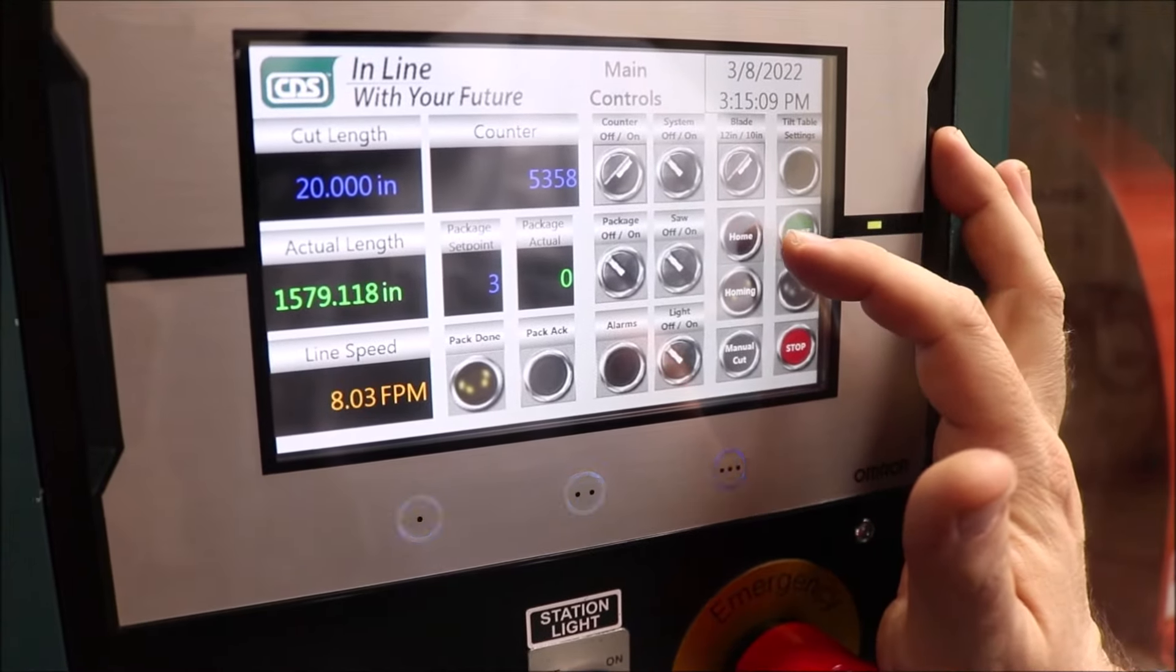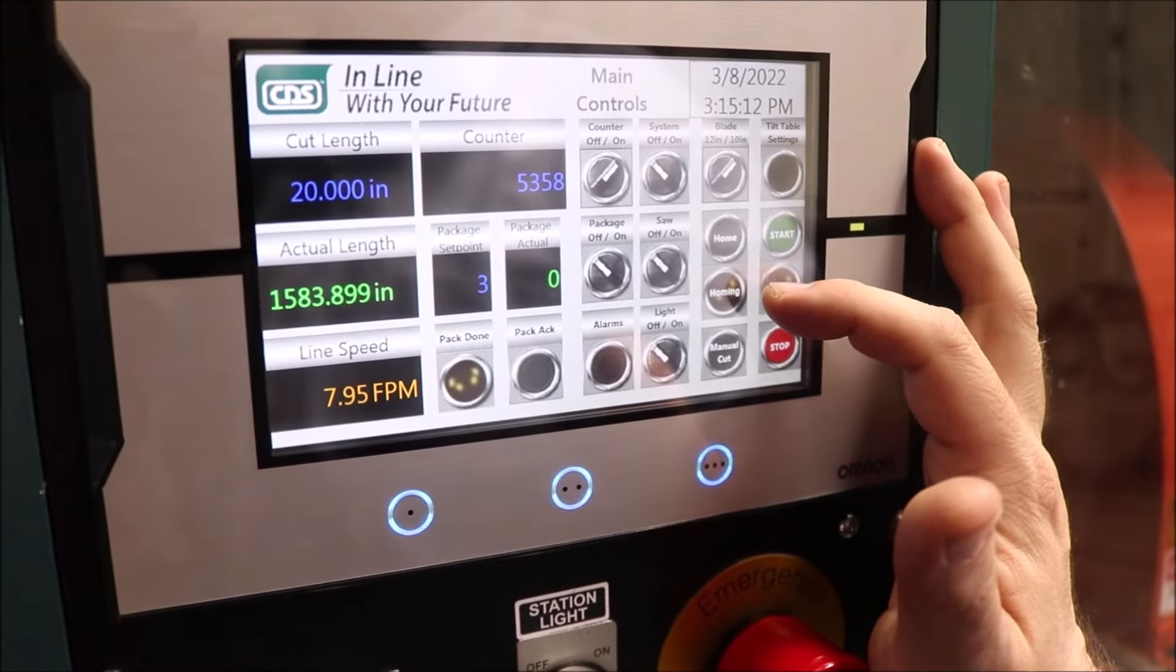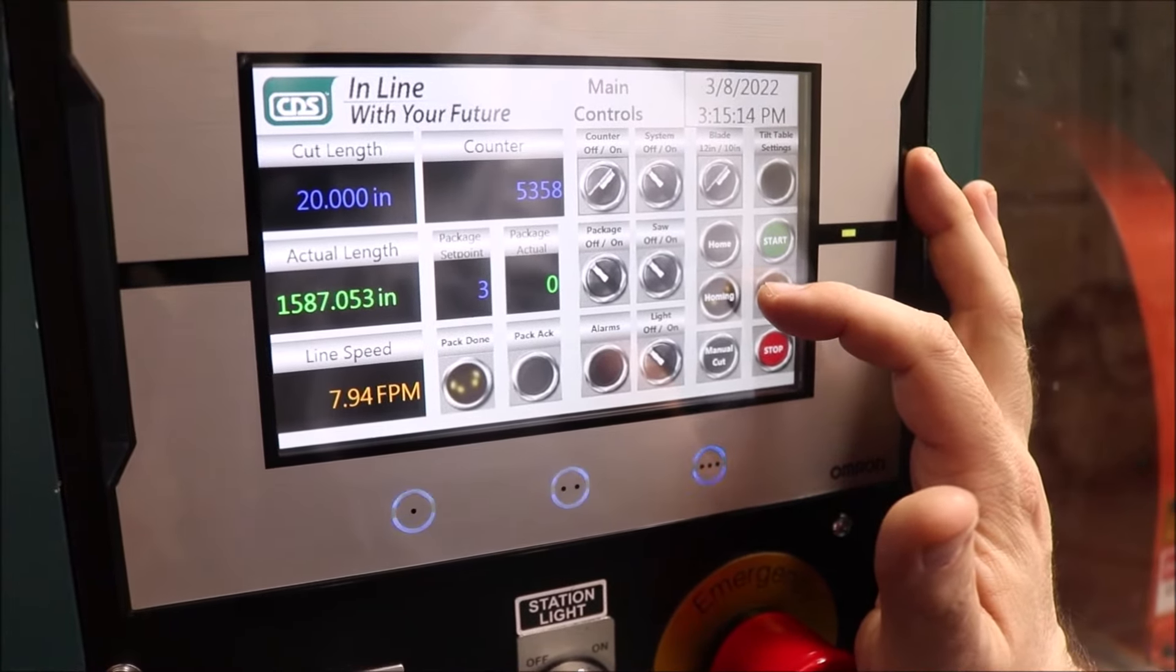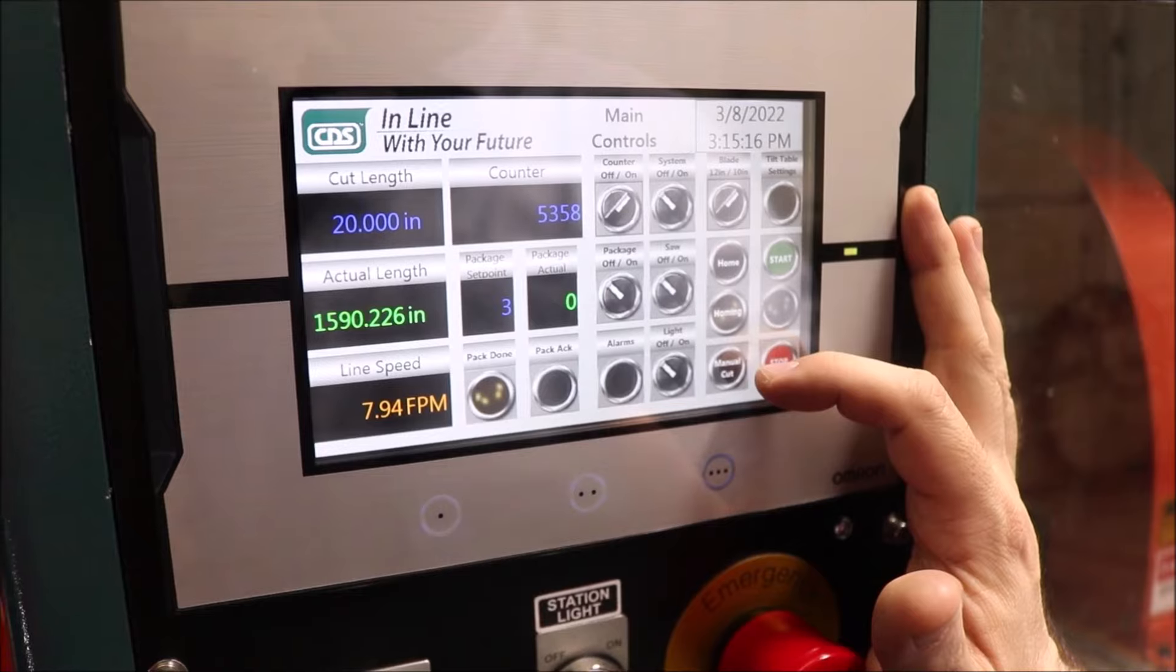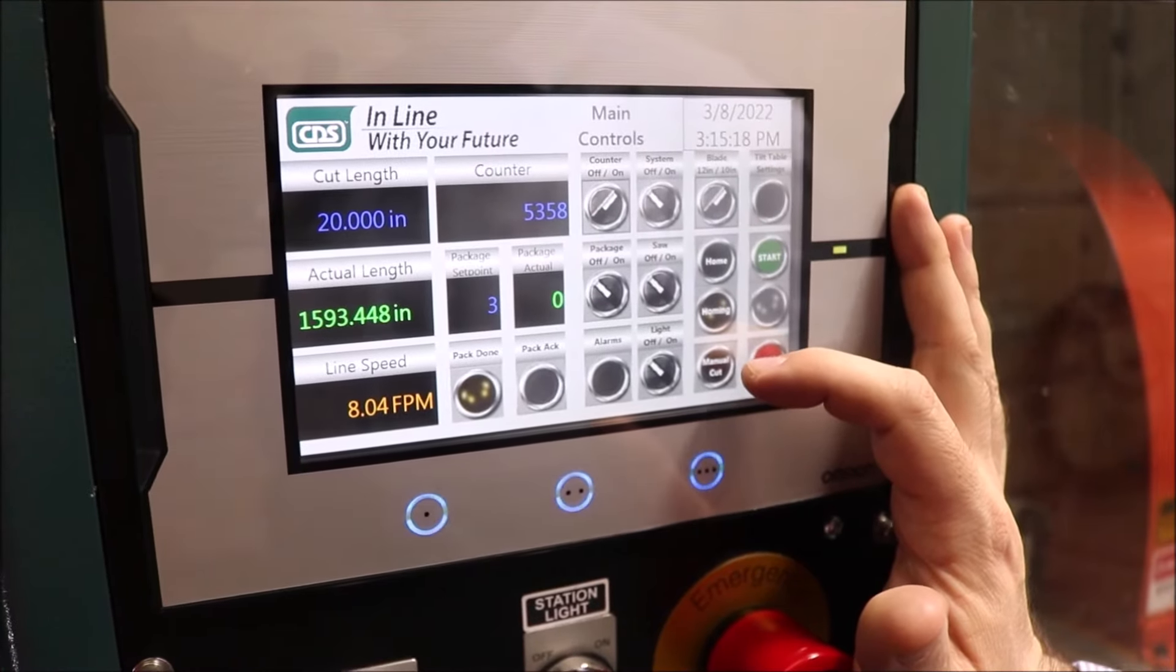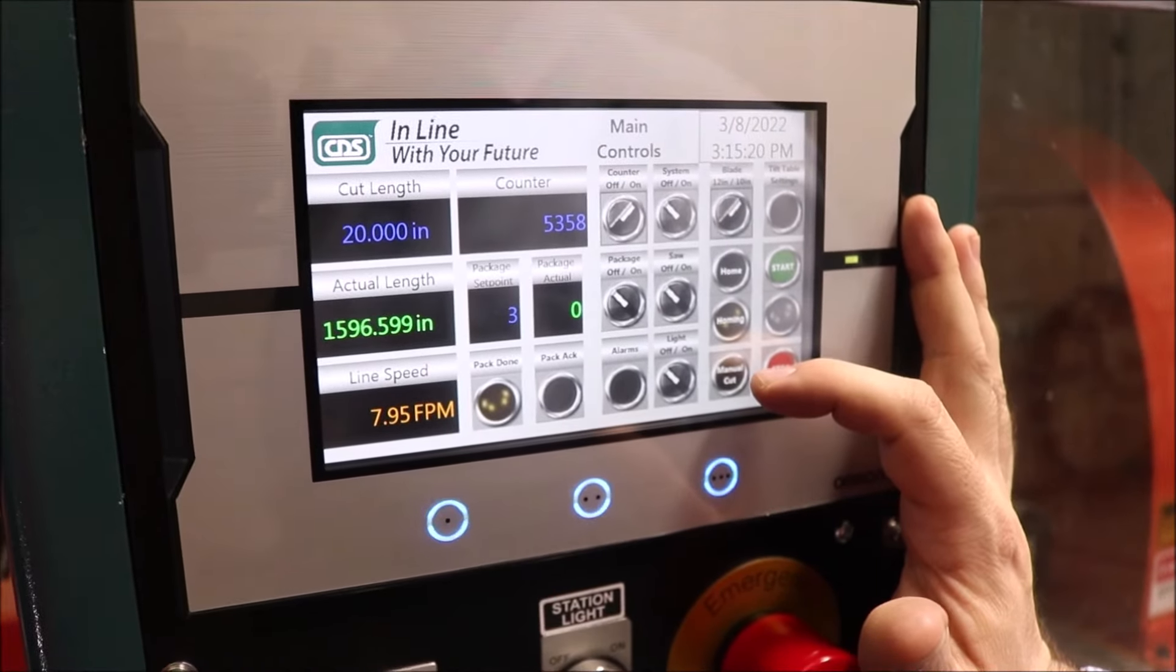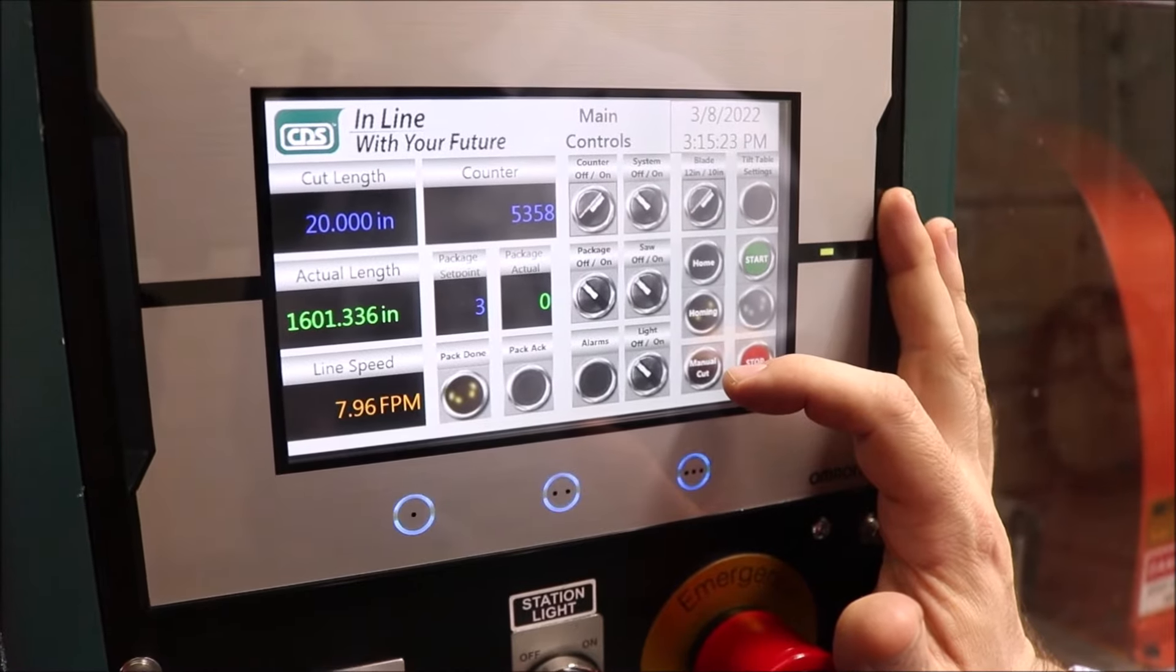Then right beside it, you have the home button and the homing light whenever your machine is in homing procedure. The manual cut button right under is the button in order to do any manual cuts at any given time during or in between two cycles.